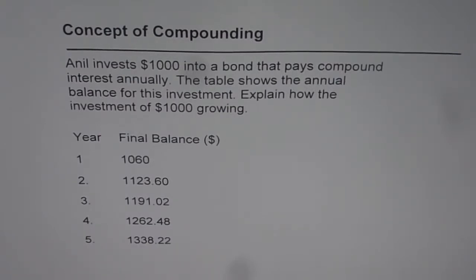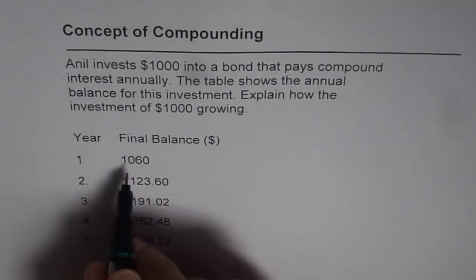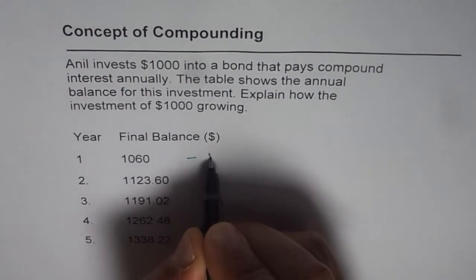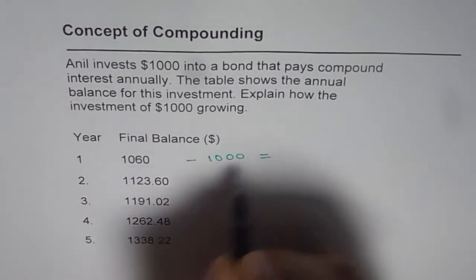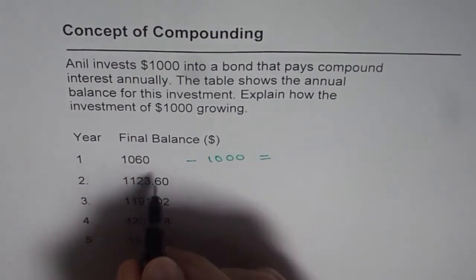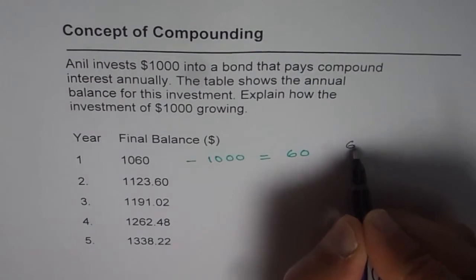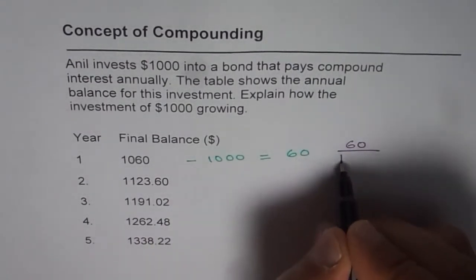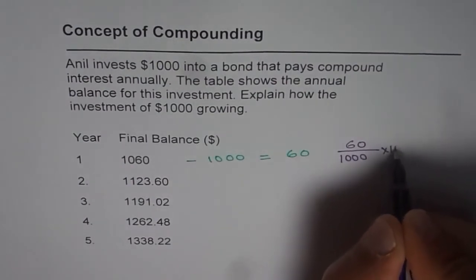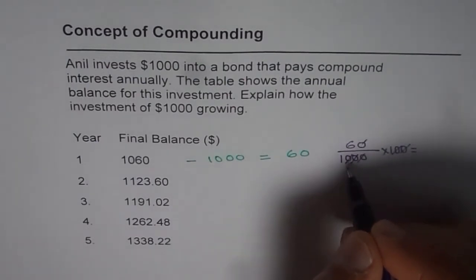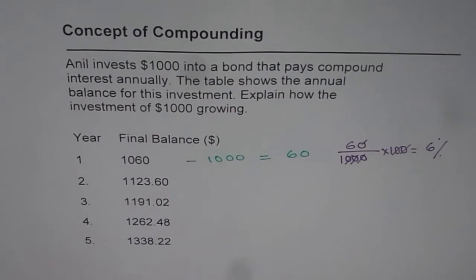Now let's discuss how this money invested is growing. We started with $1000, and at the end of one year it grows to $1060. That means the growth is $60 — that is $1060 minus $1000. If we calculate the percent growth, it's $60 over $1000 times 100, which gives us 6%. So there is a growth rate of 6%.